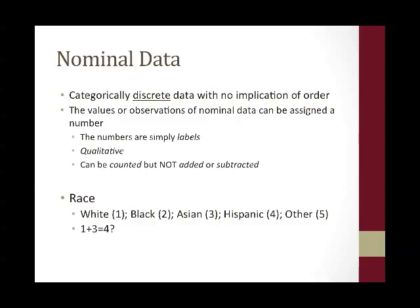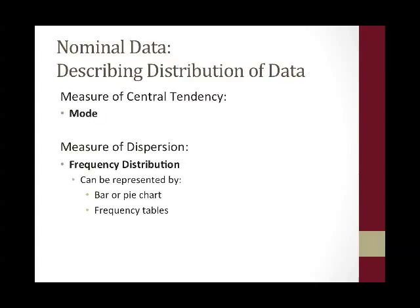And if you try to average these, you further complicate the issue. Therefore, nominal data does have limitations in the types of distribution statistics that you can report. The most appropriate measure of central tendency for nominal data is mode. The most appropriate measure of dispersion is frequency distribution. These can be represented by bar or pie charts or frequency tables. Oftentimes, people report percentages of nominal data.